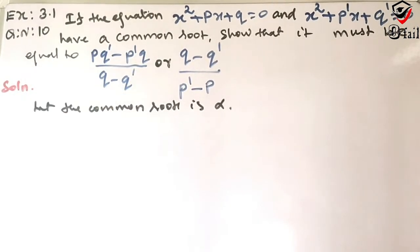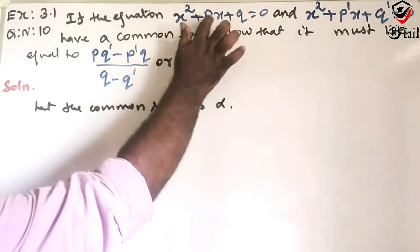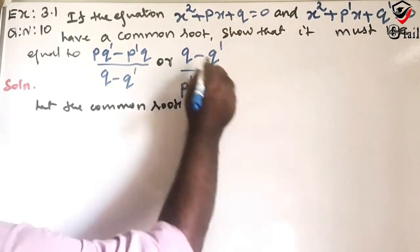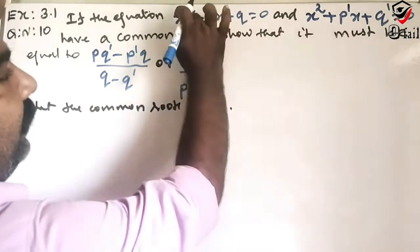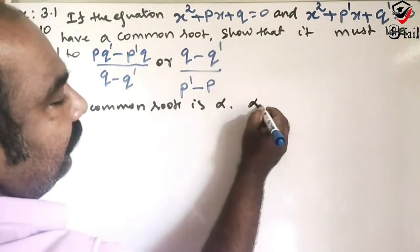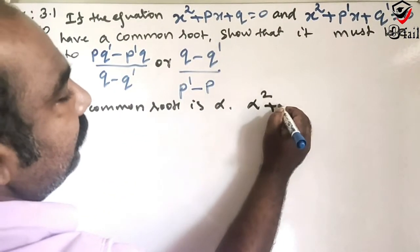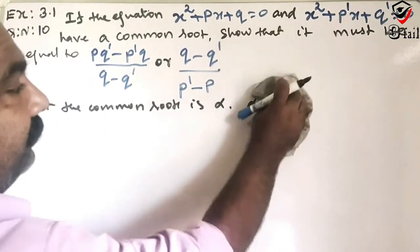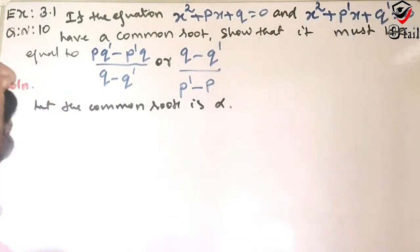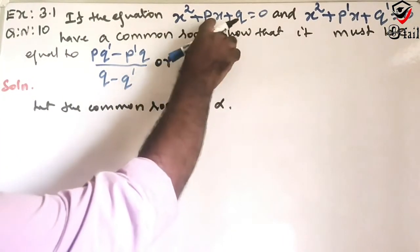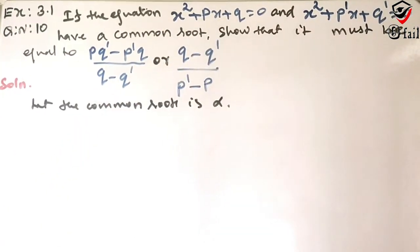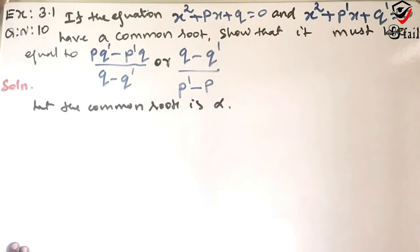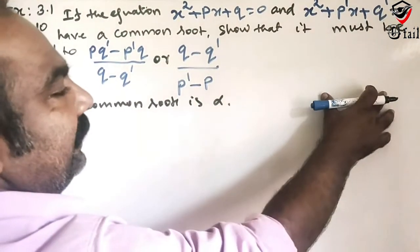Since alpha is the common root, we can write the equation: alpha² + p·alpha + q = 0. Similarly for the second equation. We will use the cross multiplication method to solve this.